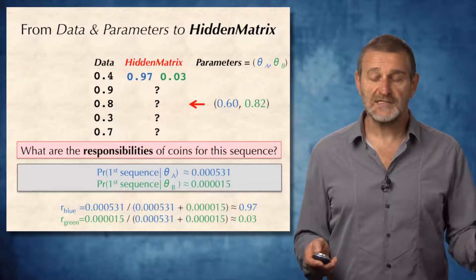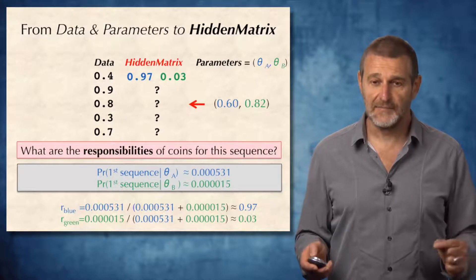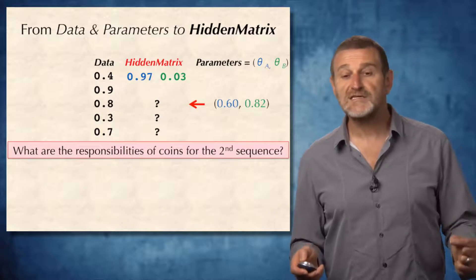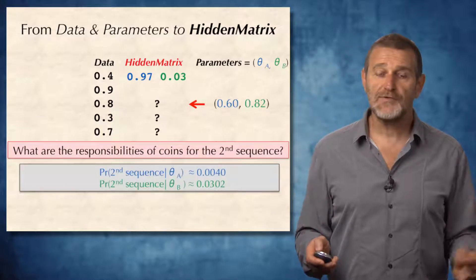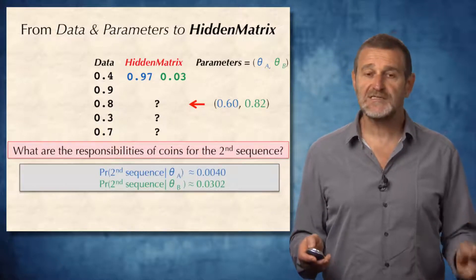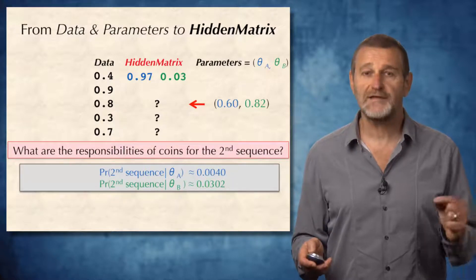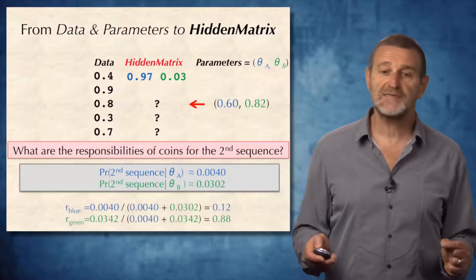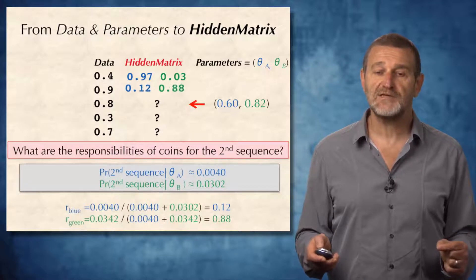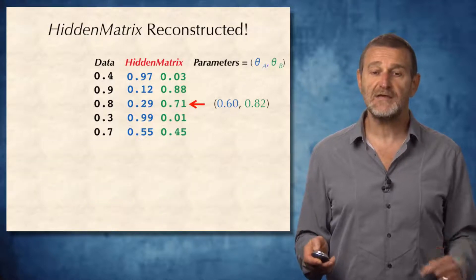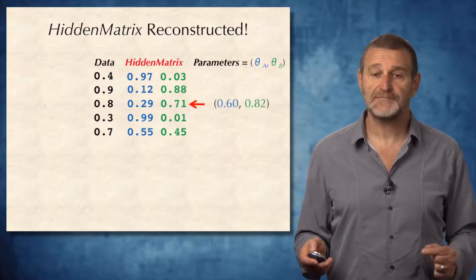So we are starting to build the hidden matrix. What are the responsibilities of the second sequence? Once again, we compute the probability of the second sequence being generated by the blue coin and the green coin, and similarly compute the corresponding responsibilities. Proceeding in this way, we compute the entire hidden matrix.